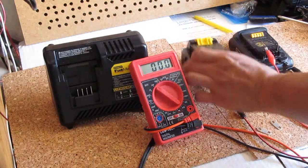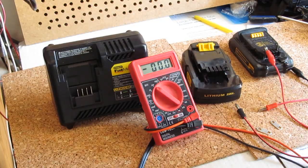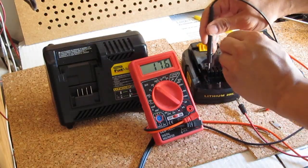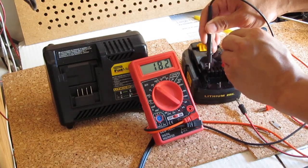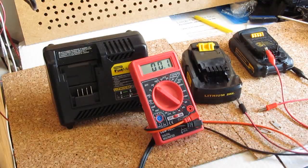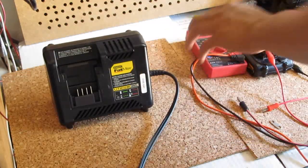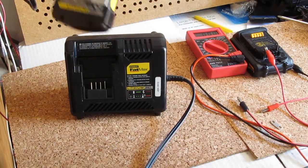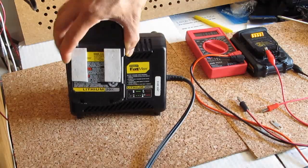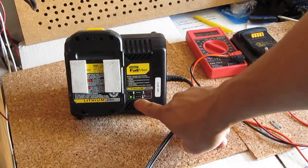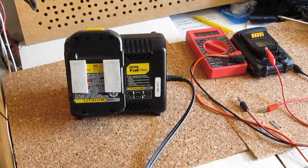All right, so let's see what the voltage of the dead battery now is: 18.2. That's not bad. And let's see if the charger is going to recognize it right now. See that? Green light, no more red light blinking.